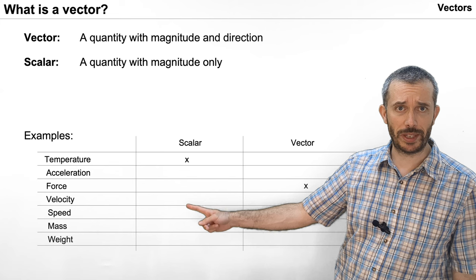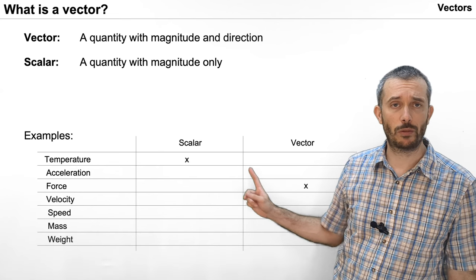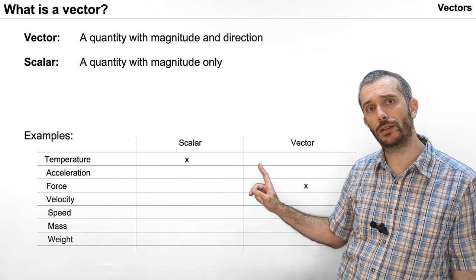For the other items in this list, can you decide whether it's a scalar or it's a vector?